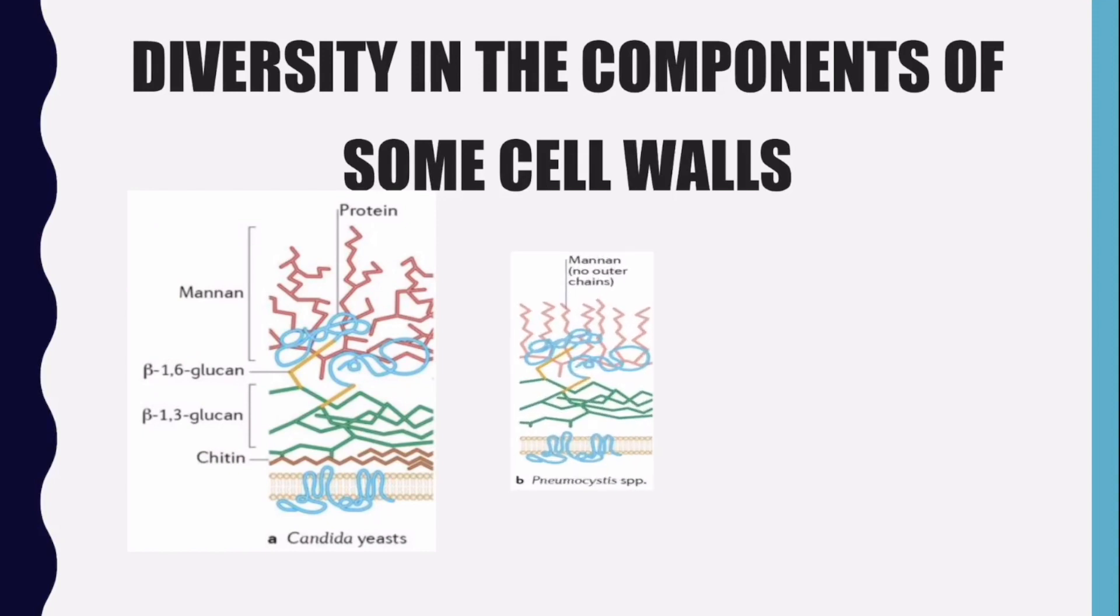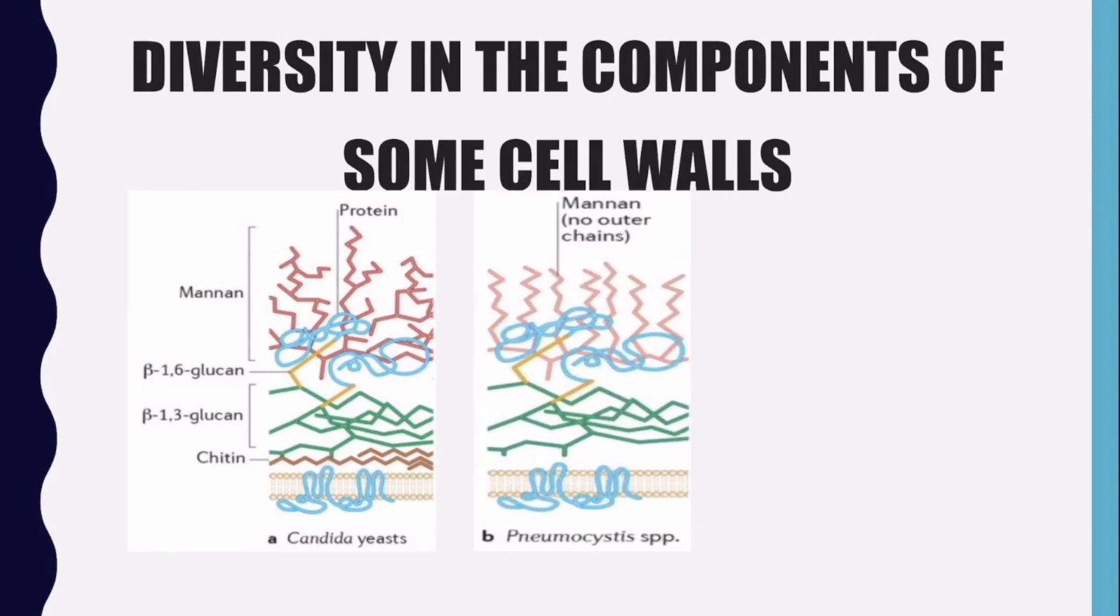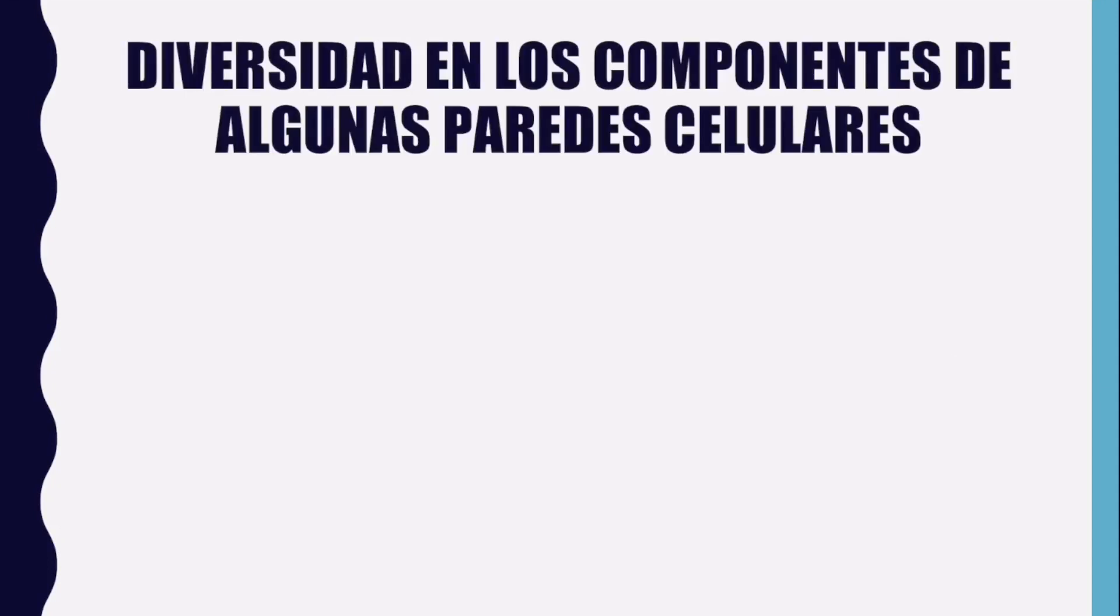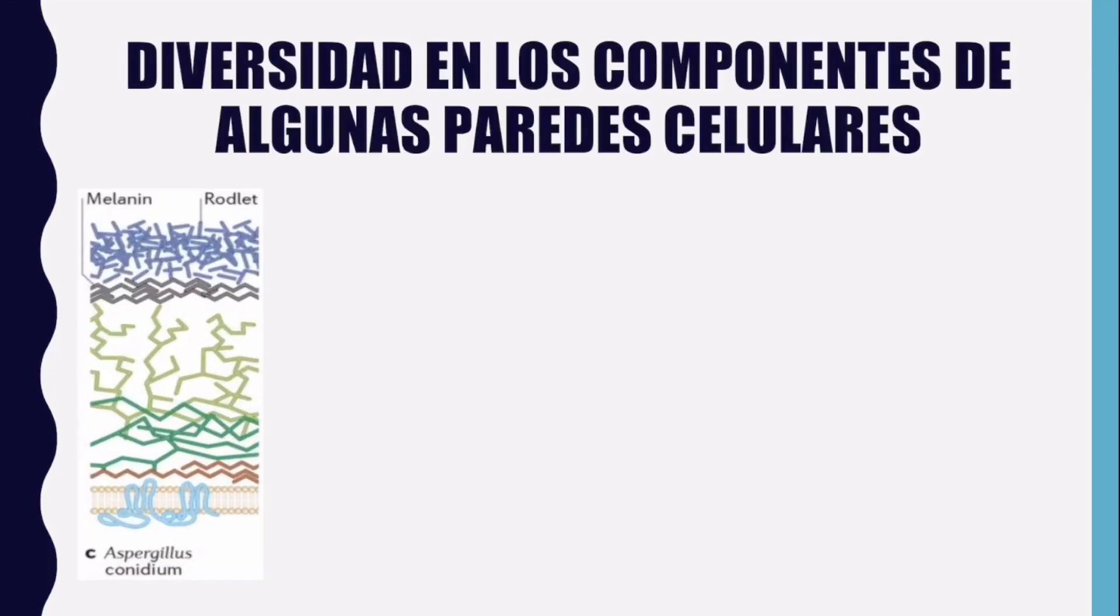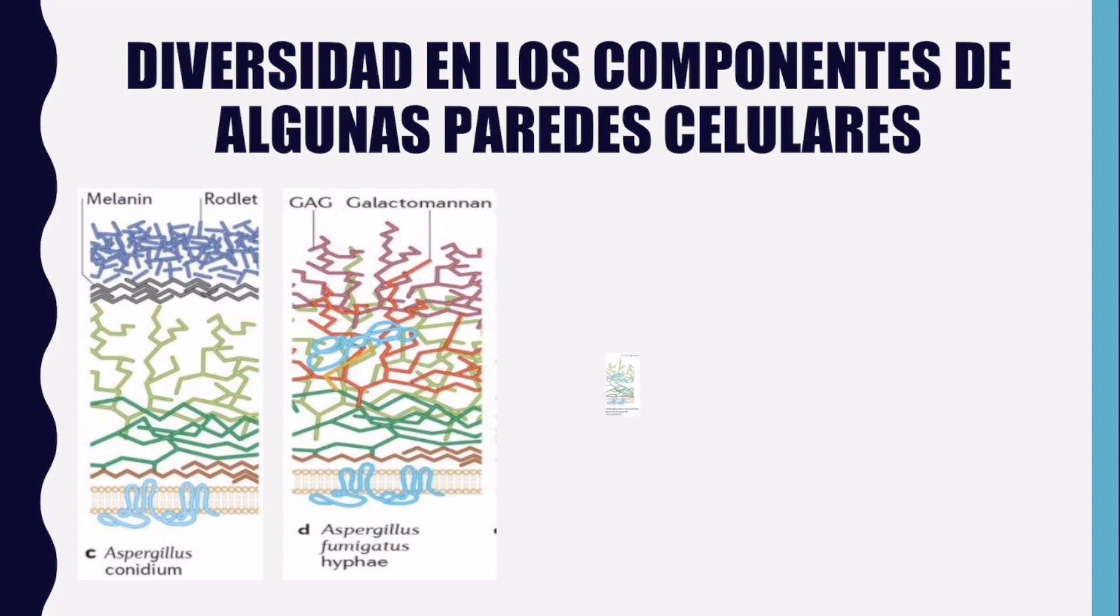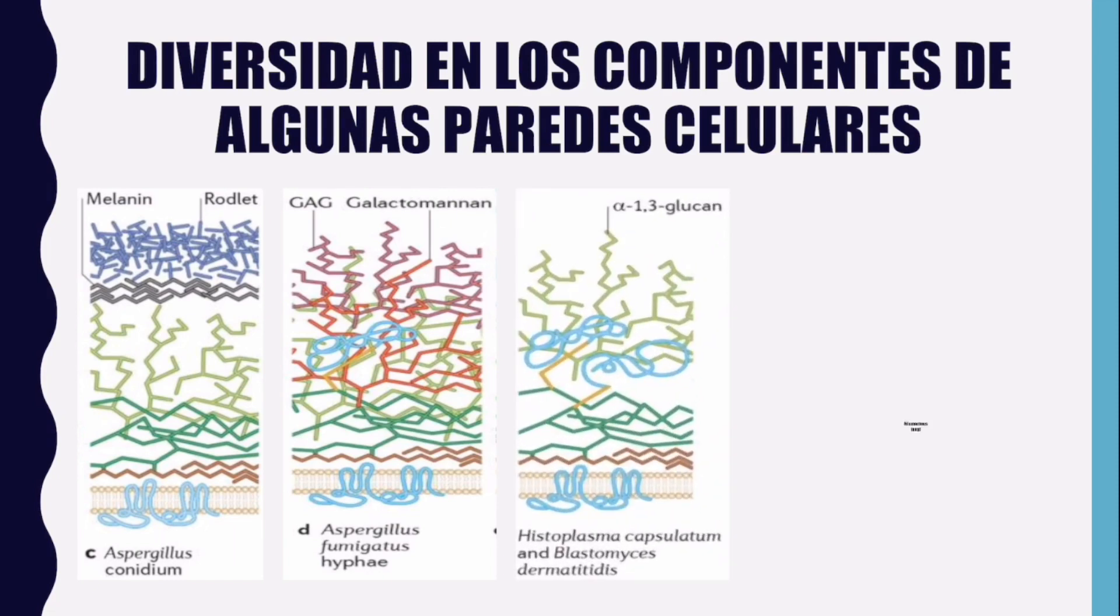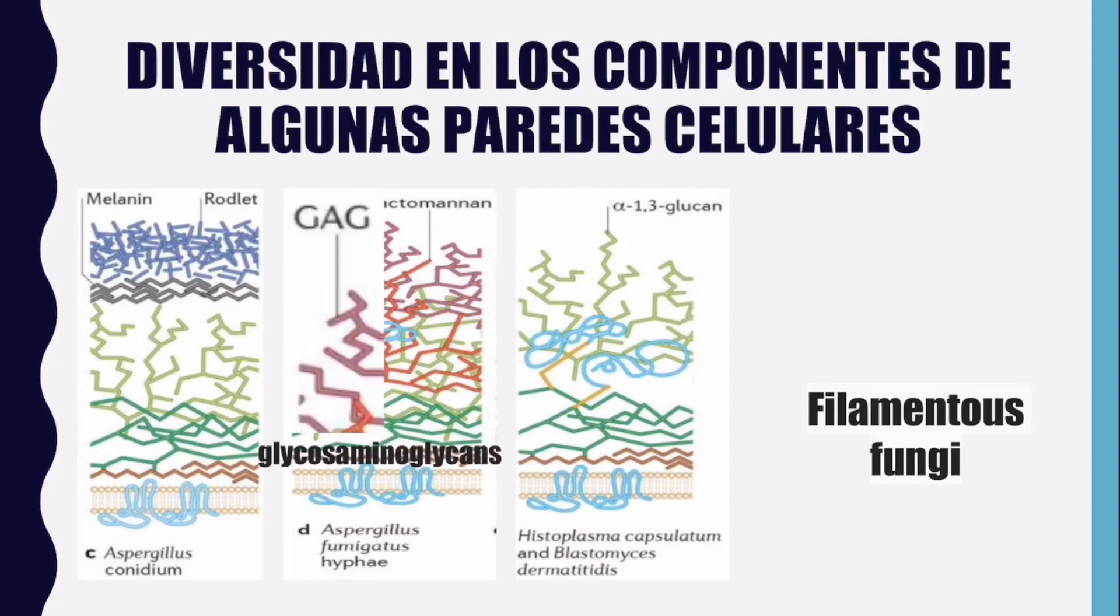Moreover, Candida yeasts and the genus Pneumocystis share most of their wall compositions besides both being yeasts. Meanwhile, Aspergillus candidum, Aspergillus fumigatus hyphae, Histoplasma capsulatum, and Blastomyces dermatitidis are examples of the glycosaminoglycan producing filamentous fungi.